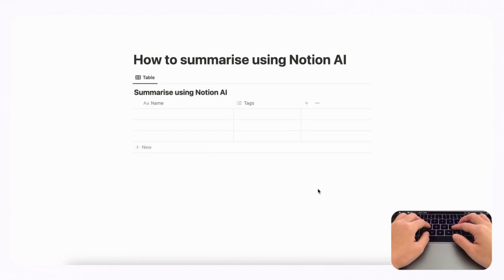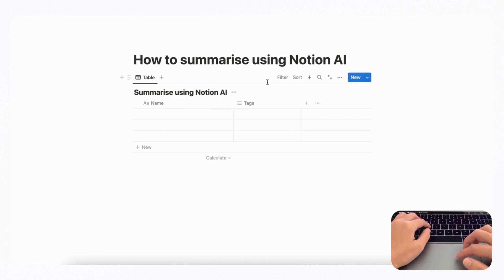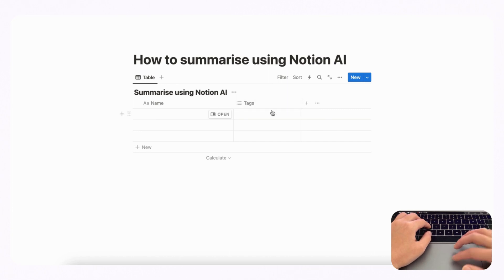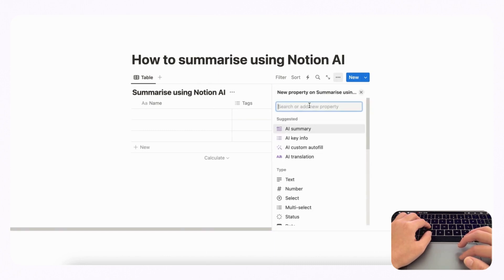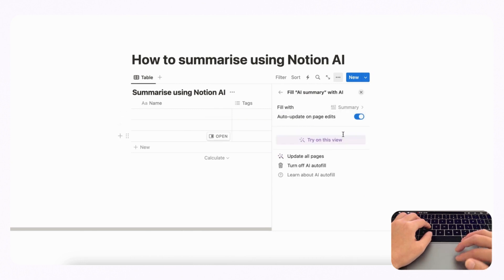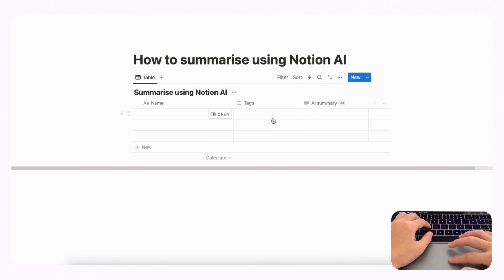The first way we wanted to show you is by going to a Notion database — you can follow along as we go. If you want to add a Notion AI property to a database that's going to summarize your text, all you have to do is click the plus button here to add a new property. If you have Notion AI enabled, you'll be able to simply click AI Summary, and you can choose whether or not it's going to auto-update on page edits.